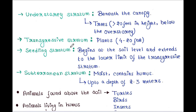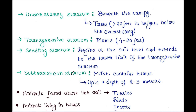Next is the transgressive stratum. Here you will find plants with a height of 4 to 20 feet. Next is the seedling stratum. It begins at the soil level and extends to the lower limit of the transgressive stratum.